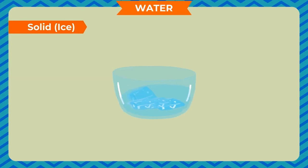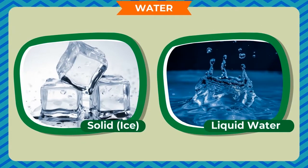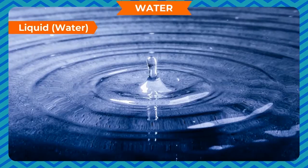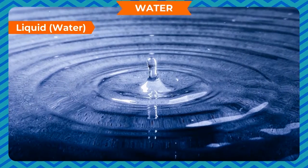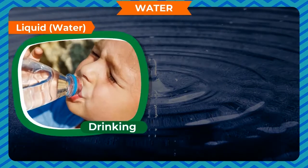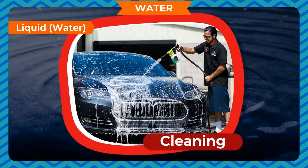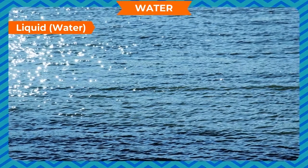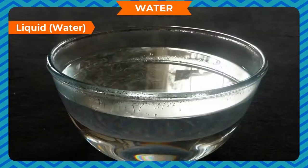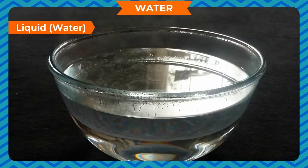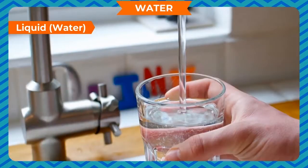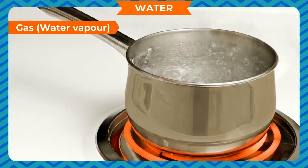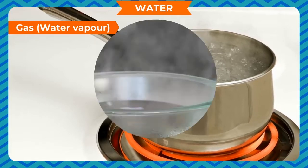Ice, water and water vapor are the three forms of water. Liquid water is used for drinking, washing and cleaning, etc. It has no definite shape. It takes the shape of the container into which it is poured. Pure water is colorless and odorless.